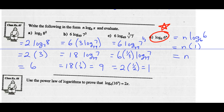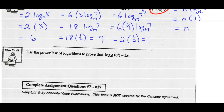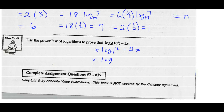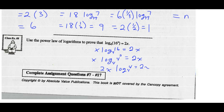Example 8: use the power law of logarithms to prove that log of 16 to the exponent x base 4 is the same as 2x. Working on the left side, bring the exponent x out front: x times log of 16 base 4, supposed to equal 2x. Rewrite 16 as a power of base 4 — 16 is 4 squared — then bring that exponent out front: 2 times x times log of 4 base 4 equals 2x. We know log of 4 base 4 is 1, so 2x times 1 equals 2x. That's a true statement.